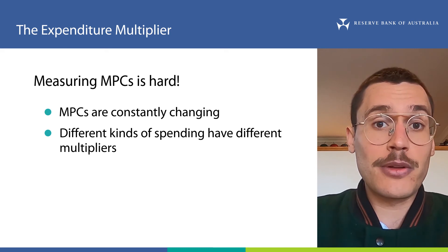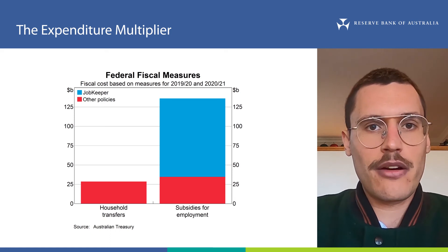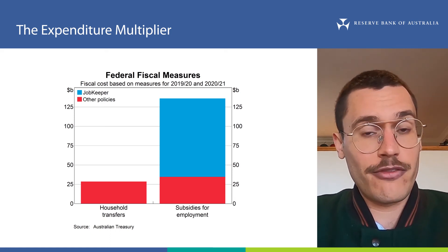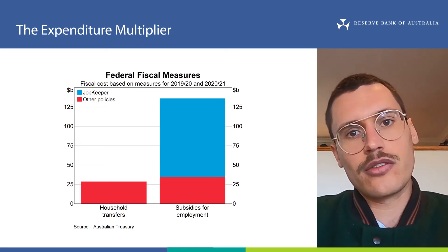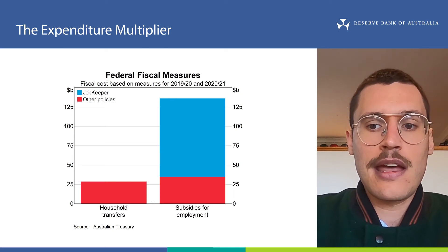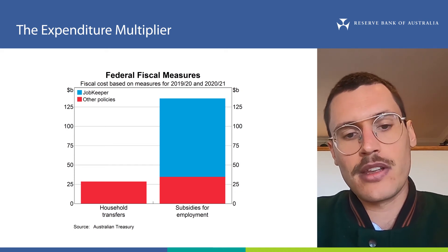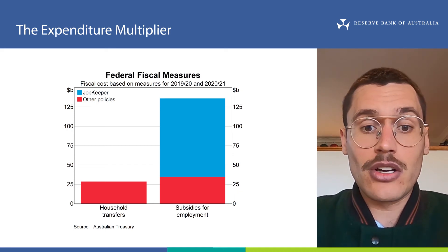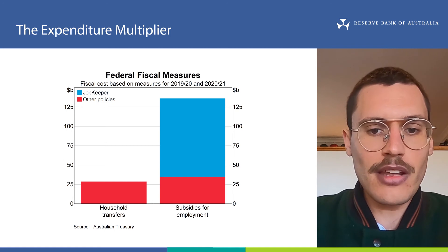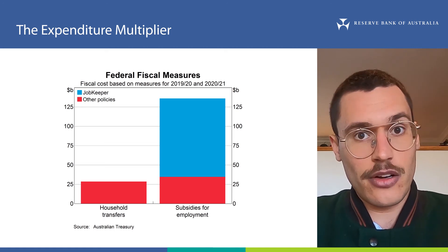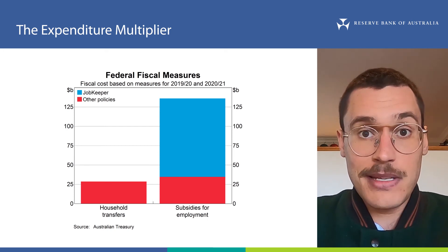I want to finish by talking about how multipliers are used in real life. During COVID-19, you might be aware of many policies put in place to help people who faced disruptions to their income. Governments provided money where incomes were lost, the Reserve Bank reduced the cost of borrowing money, and commercial banks gave some borrowers temporary holidays from paying back their loans. This is a chart which shows how many billions of dollars the federal government announced it would spend on some policies in response to COVID-19. The policies shown — household transfers and subsidies for employment — both involve the government providing money directly to households and businesses.